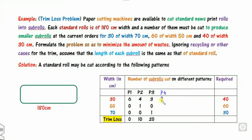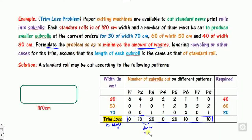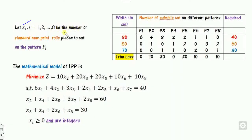Similarly you can construct the remaining cases, finding all 8 cutting patterns. Let X1, X2, ..., X8 be the number of standard rolls cut according to each pattern. The objective function to minimize trim loss is: minimize 0·X1 + 10·X2 + 20·X3 + 0·X4 + 20·X5 + ... (based on the waste per pattern).